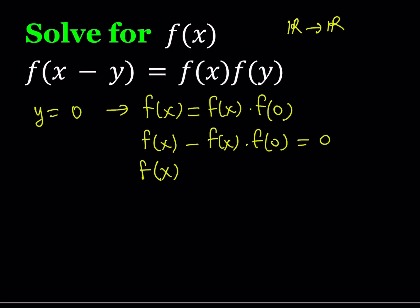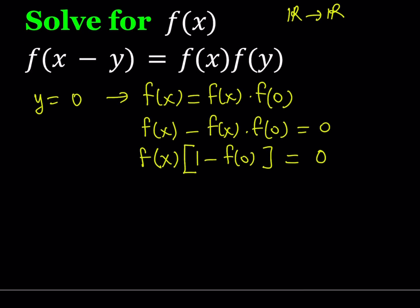When I take out f of x I should be getting 1 minus f of 0 equals 0. Now we have a product which is pretty good. If the product of two or more things is 0 then each factor can be set equal to 0.